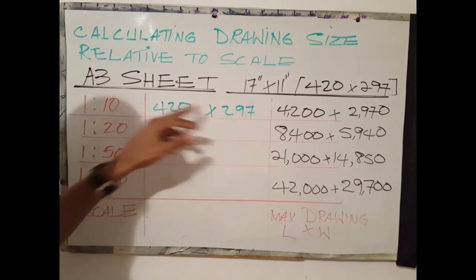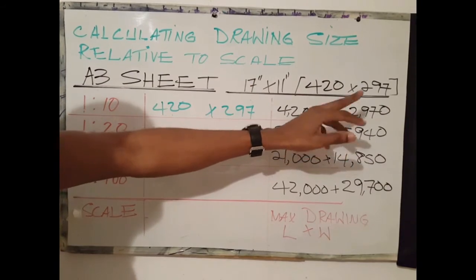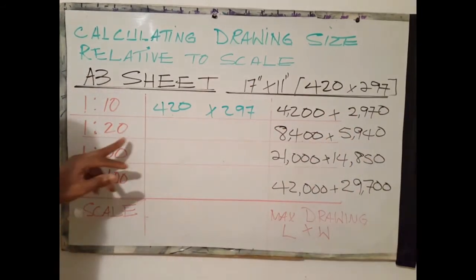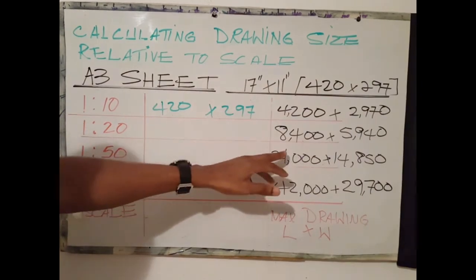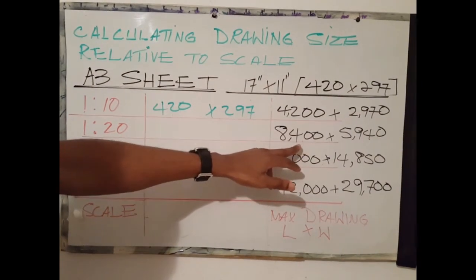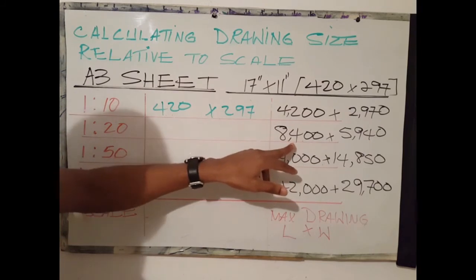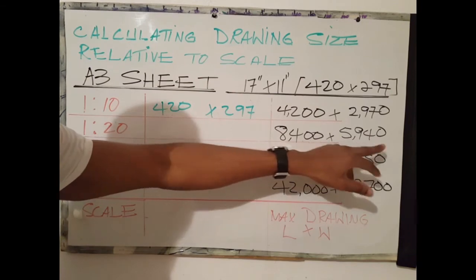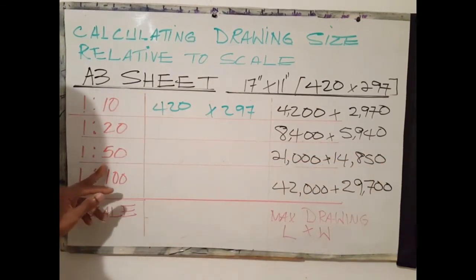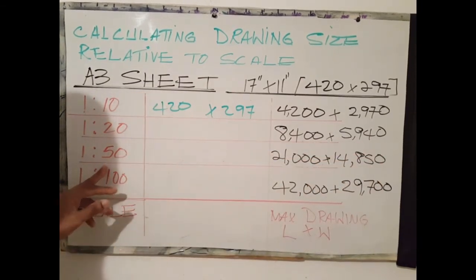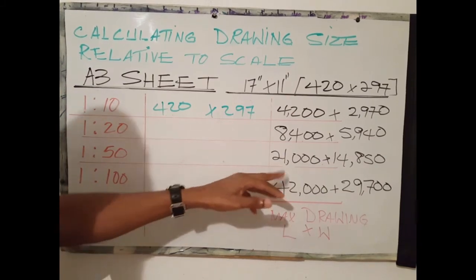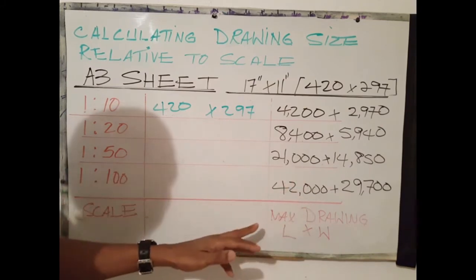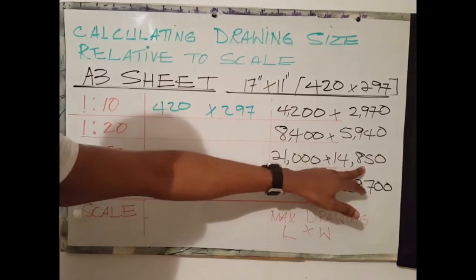297 by 10 gives us 2970 millimeters. On a 1 to 20 scale, the maximum dimension would be 8400 millimeters by 5940. On a 1 to 50 scale, the maximum length that this paper would be able to accommodate is 21,000. Maximum width 14,850.